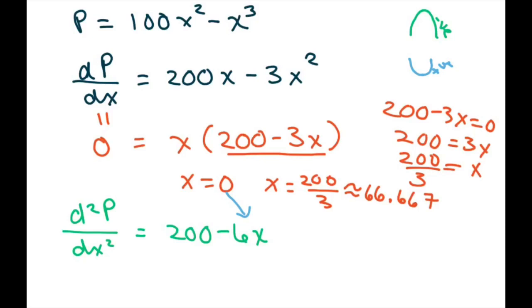This number is negative. Therefore, P is a maximum at x equals 66.667. Now, all you have to do to solve for y is plug it back in.